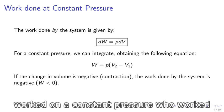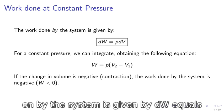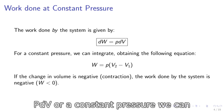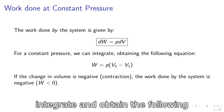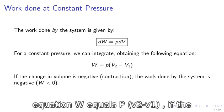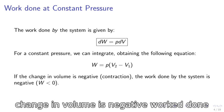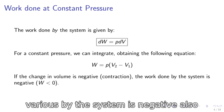The work done at constant pressure. The work done by the system is given by DW equals PDV. For a constant pressure, we can integrate and obtain the following equation: W equals P(V2 minus V1). If the change in volume is negative, the work done by the system is negative also.